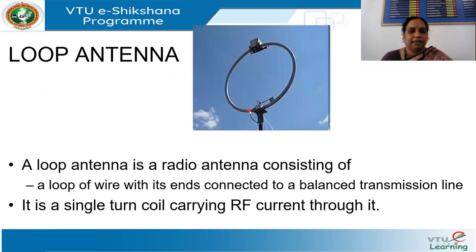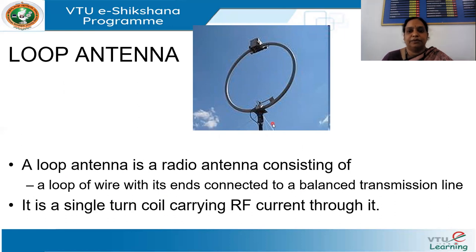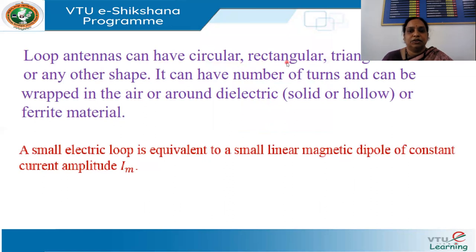As the name indicates, the loop antenna is a circular wire or loop of wire whose ends are connected to a balanced transmission line. Through the transmission line you supply the signal to be radiated. It is a radio antenna consisting of a single-turn coil carrying RF current. The shape can be circular, triangular, rectangular, or any other shape. It can also have multiple turns and can be wrapped around an air or solid core — the core can be hollow (air), dielectric, or ferrite material.